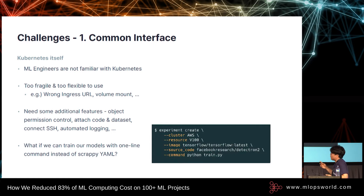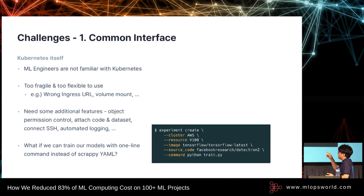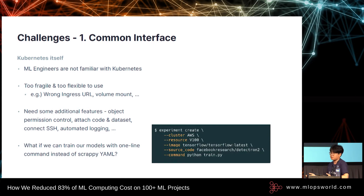That's why we started writing our own command line tools and templates. It works like this: you can type 'experiment create' with cluster AWS, resource 300, Docker TensorFlow, command Python train.py — and you can create your machine learning workflow on the Kubernetes cluster, whatever cloud you use.